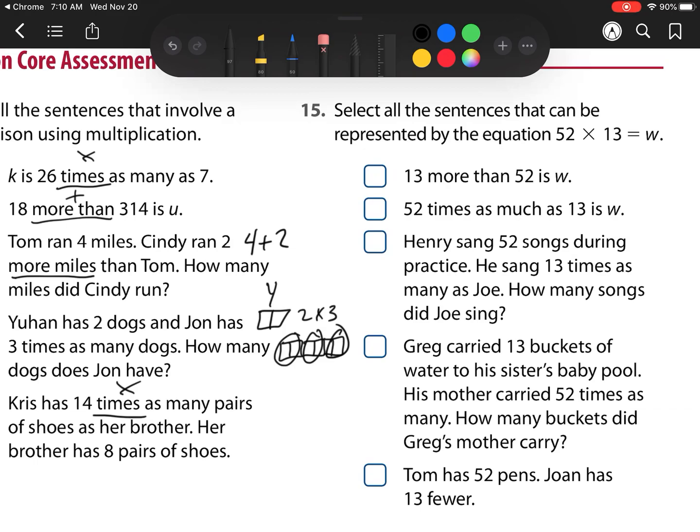Our last problem is select all the sentences that can be represented by the equation 52 times 13 equals W. Well, 13 more than 52, well that is 52 plus 13, so it's not the first one. So I see that multiplication symbol being represented by times, so I will select that. Henry sang 52 songs during practice. He sang 13 times as many as Joe, so that's 52 times 13. So I will select that one. Greg carried 13 buckets of water to his sister's baby pool. The mom carried 52 times as many. So that mom is being put to work. And our last one. Tom has 52 pens, Johan has 13 fewer. Well, that's 52, fewer is that subtraction word, so it would not be that one. That's all we have for Lesson 6-1.